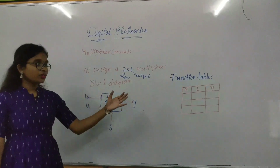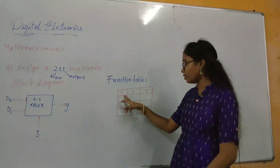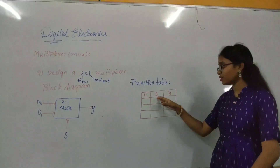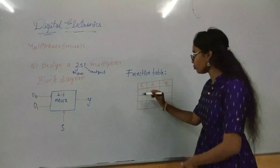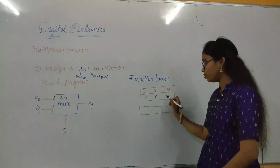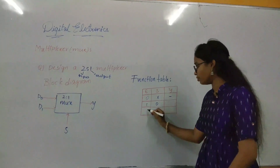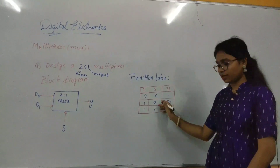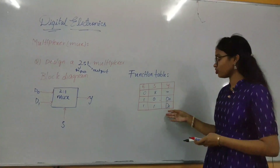The 2-by-1 function table for the MUX consists of E (the enable input, which is the main part of the MUX), S (the selection line), and Y (the output). If E is 0, whatever the selection line may be, the output will be none. If E is 1, the selection line may be 0 or 1: the output will be D0 if the selection line is 0, and D1 if the selection line is 1.